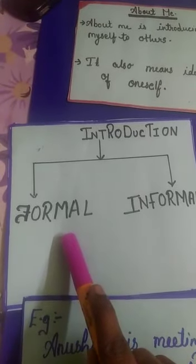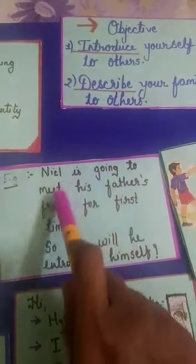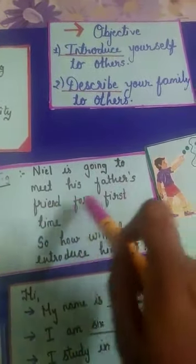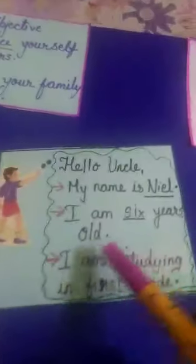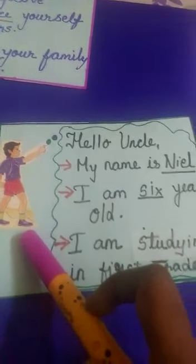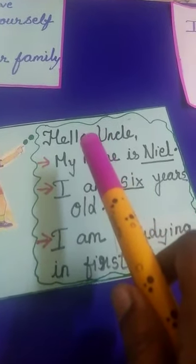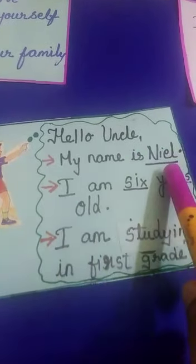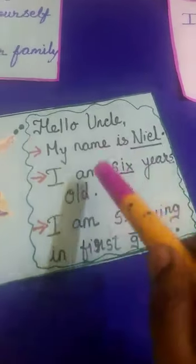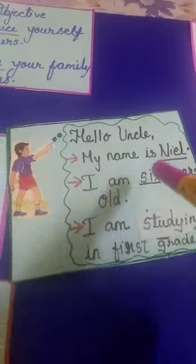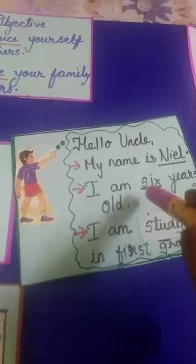How will you introduce yourself? Here is one example. Neil is going to meet his father's friend for the first time. How will he introduce himself? Neil is introducing himself to his father's friend: My name is Neil. I am six years old. I am studying in first grade. This is the way he introduces himself to someone he is meeting for the first time.